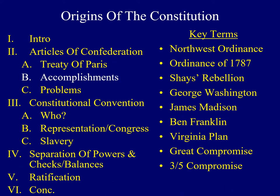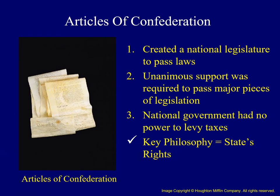Now let's explore some of the accomplishments associated with the Articles of Confederation — the name given to the first Constitution of the United States. It had several interesting provisions. First, it established a national legislature empowered to pass laws; there was no executive nor judicial branch. Secondly, in order to pass major pieces of legislation, support had to be unanimous. Finally, the national government did not have the power to tax. The key philosophy governing the Articles was its emphasis on states' rights, while the national government was weak.